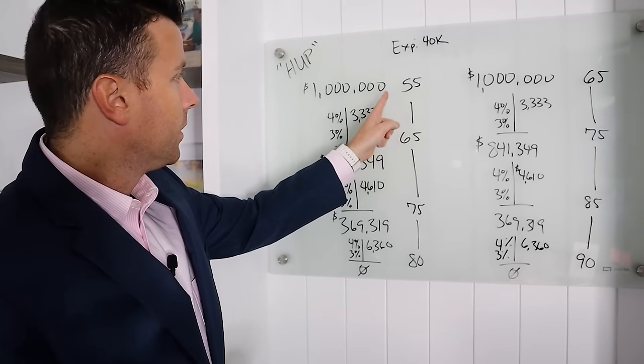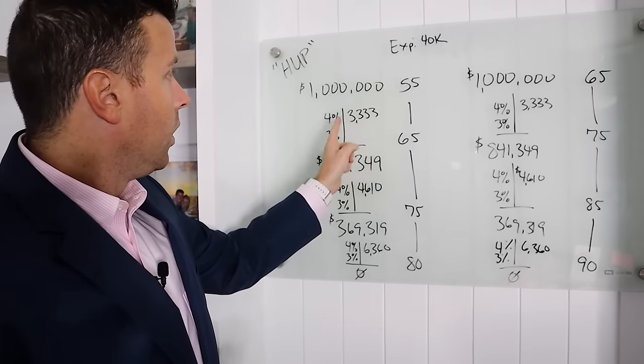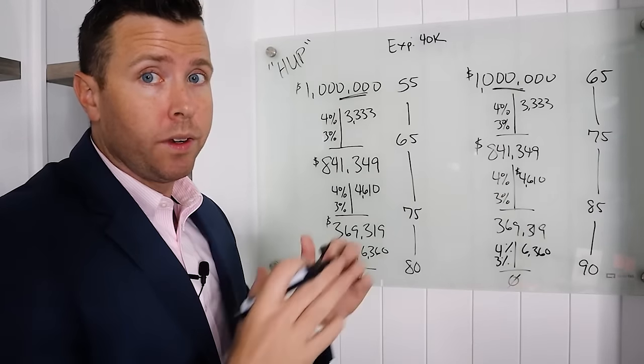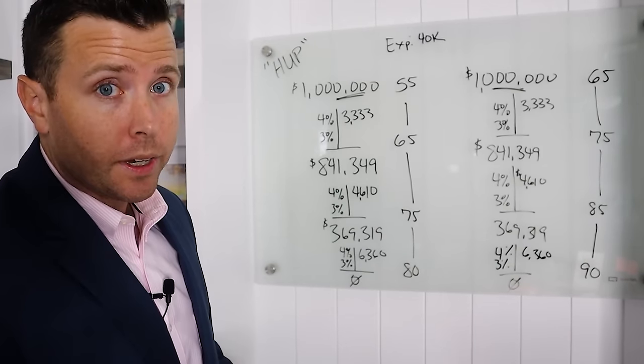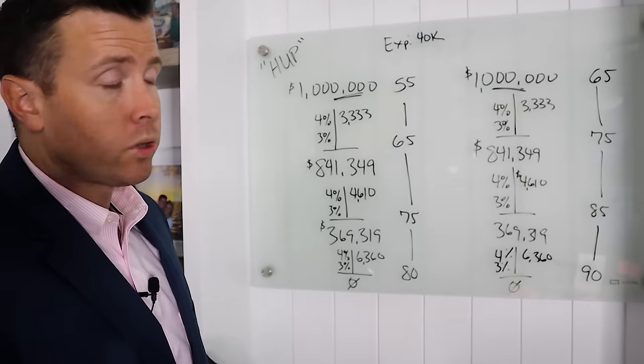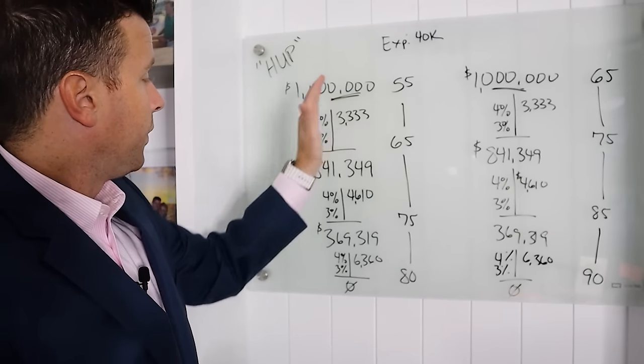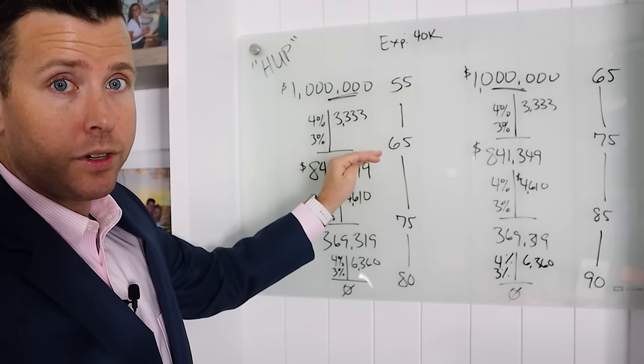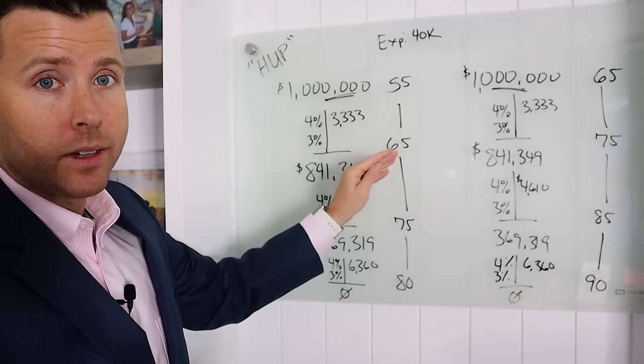So we have a 55 year old with a million dollars. He needs $40,000 a year to live off of. That's $3,333 per month. We've got a 4% rate of return, meaning this money is in some sort of investment vehicle, stock market, CD, money market, annuity, whatever, and it's earning 4%. And that's what we're going to assume throughout the life of this strategy. We have 3% inflation. So this money here is going to have inflation on it. So on both situations, we have inflation from 55 to 65. We're taking out $40,000 a year plus inflation.